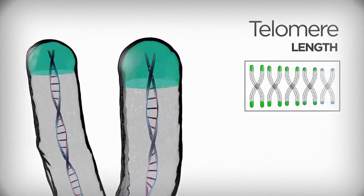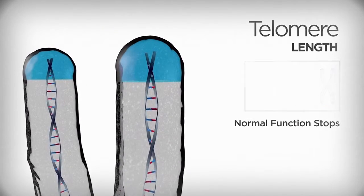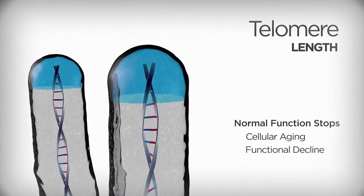When telomeres become critically short, cells stop their normal function altogether and cellular aging and functional decline occur.